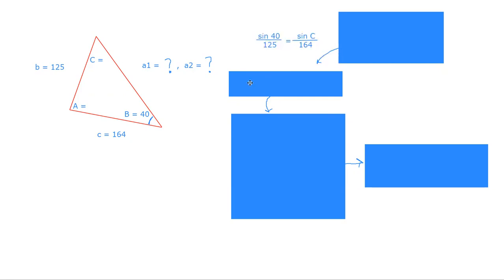So we know sine of 40 degrees, we can figure that out. We can't figure out any of the other sines because we don't know those angles but we're going to use this ratio. Sine of 40 over 125 is equal to the sine of C over 164. This tells us very quickly that the angle C when you take its sine is equal to this.